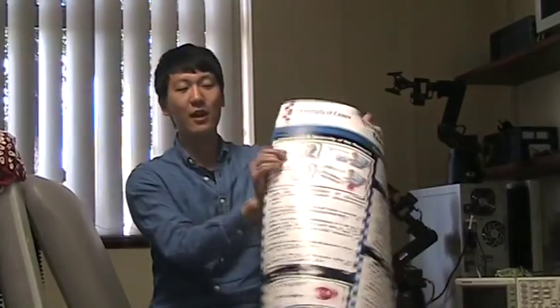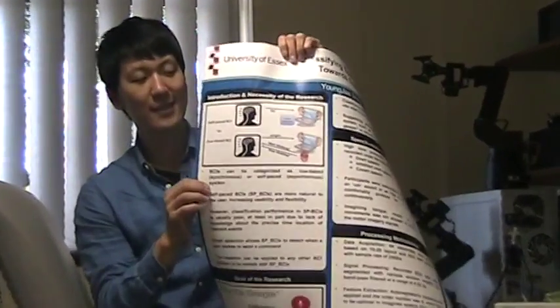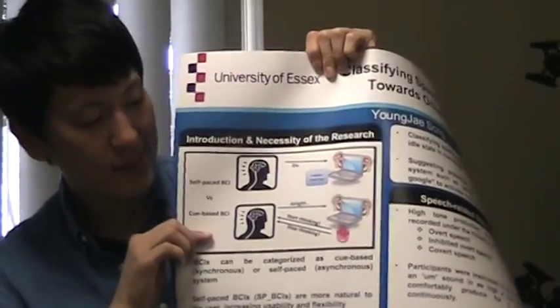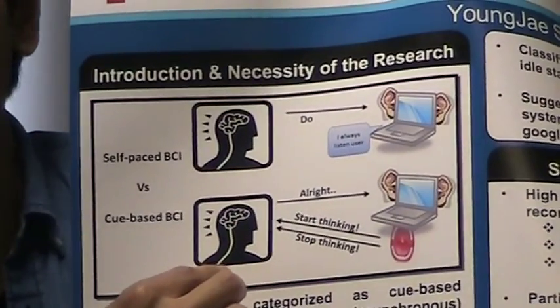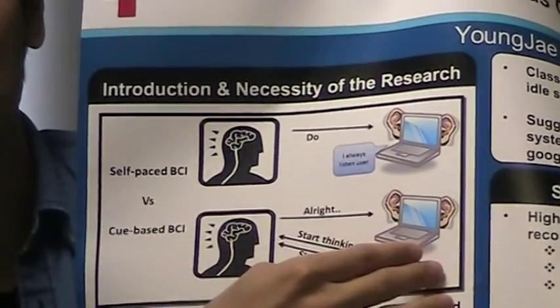My main research is about onset detection, which is the main problem in the current stage of BCI. BCIs can be categorized as cue-based systems or self-paced systems. In a cue-based system, the user must follow the machine's own timing protocol. I brought a figure to help you understand — in cue-based BCI, the machine lets the user know when to start and when to stop thinking, and the user must follow the machine.